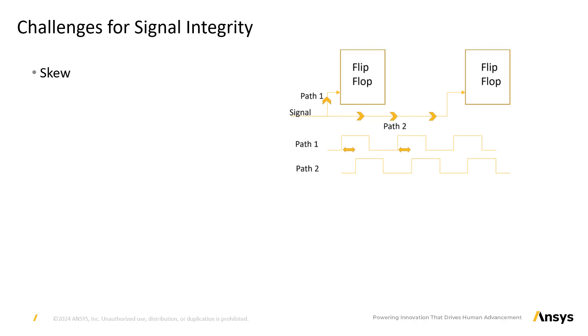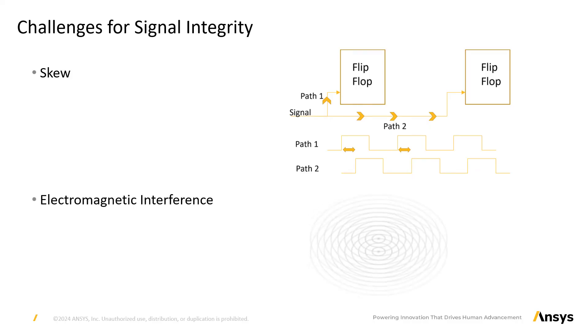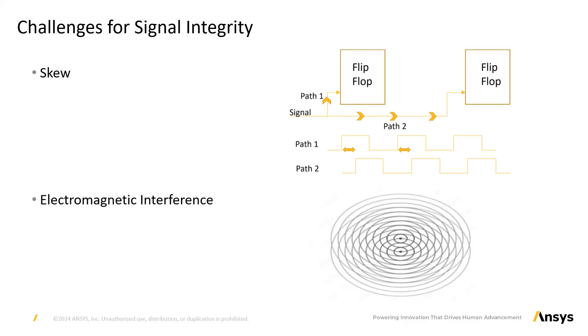Electromagnetic interference: in high-speed switching circuits at high frequencies, the traces act as antennas. The radiated signals can cause interference with other components and systems.